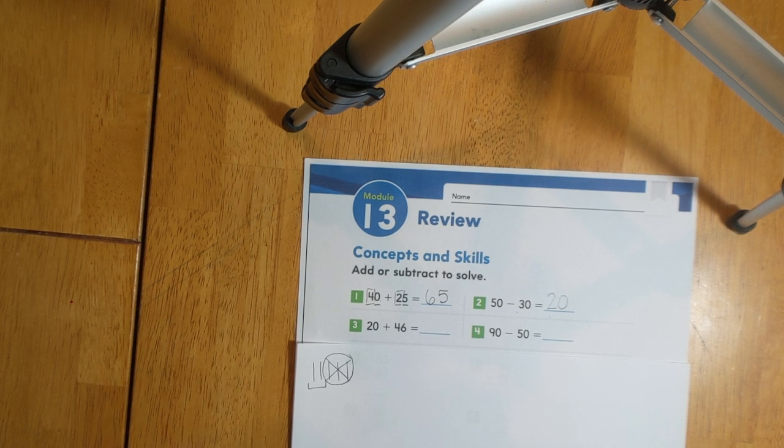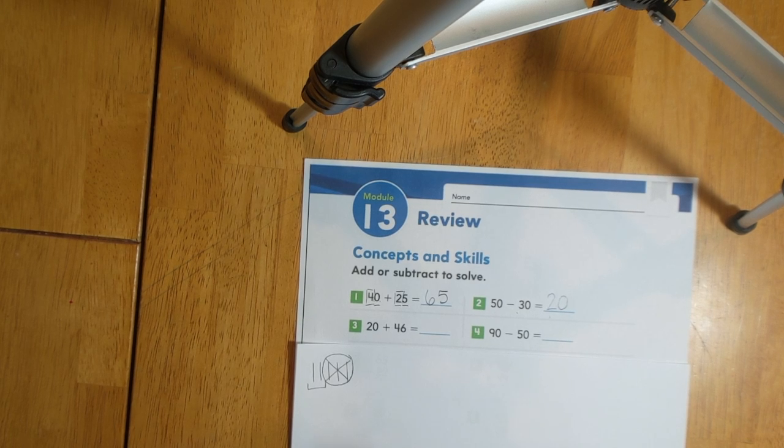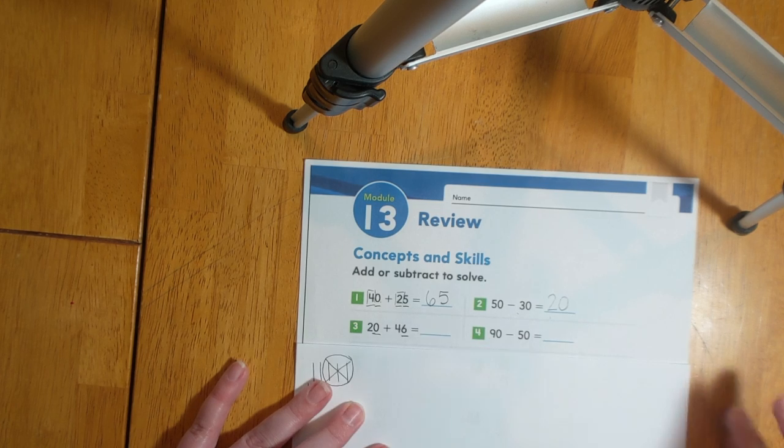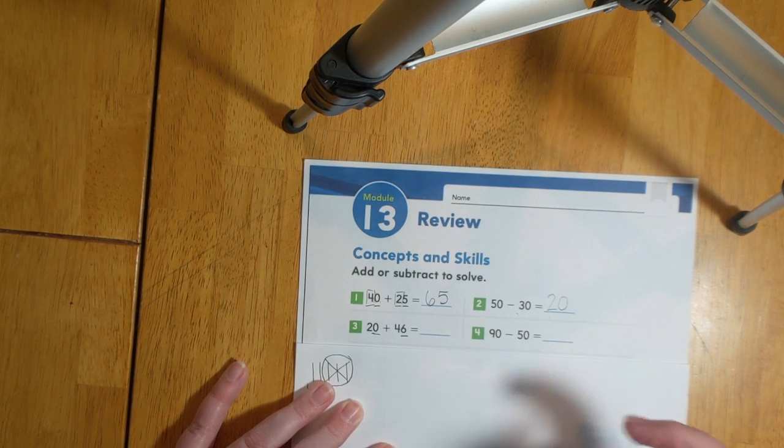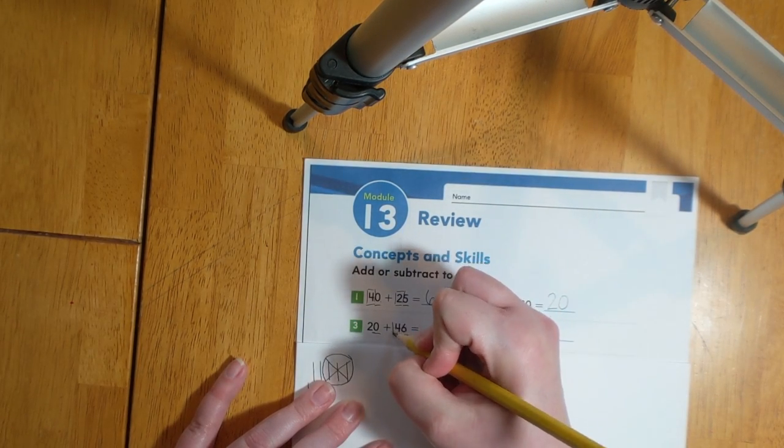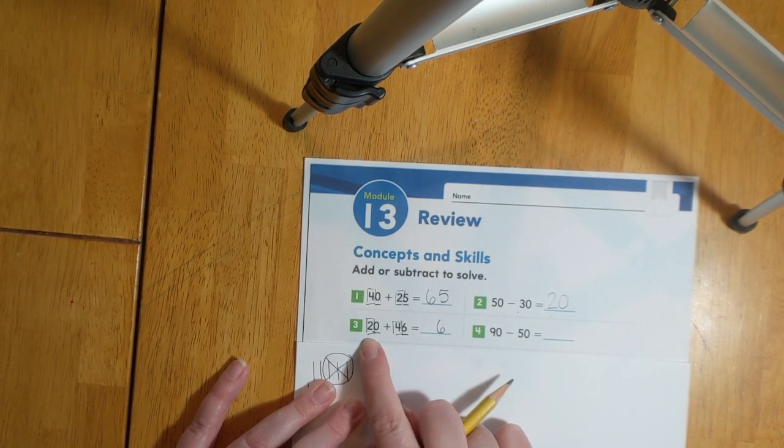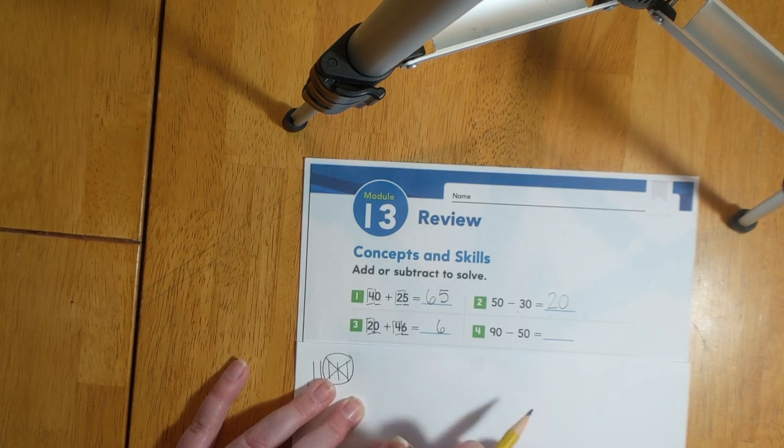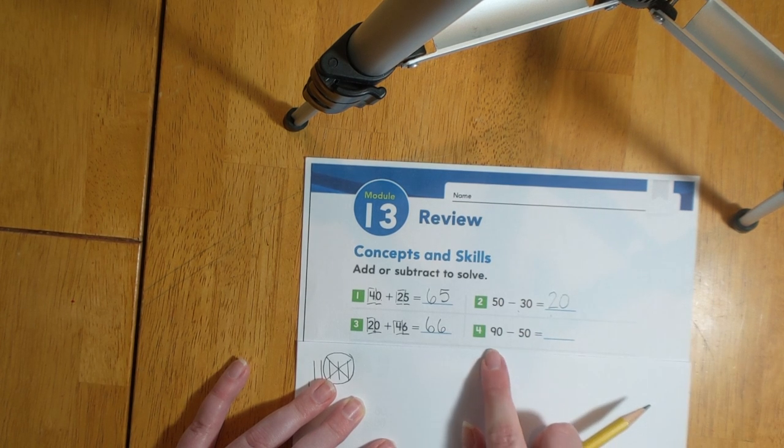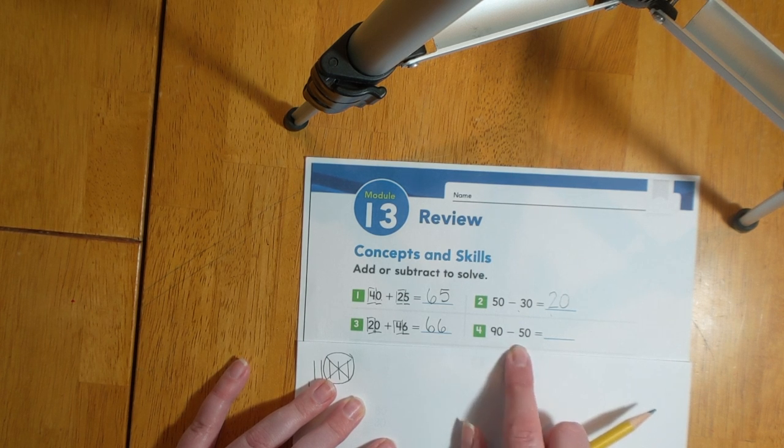Let's look at number three. We have 20 plus 46. Again let's start by adding our ones. I'm going to underline both numbers that are in the ones place. Zero plus six equals six. Now let's square off our tens. We'll be adding 2 plus 4. We know that that equals six.